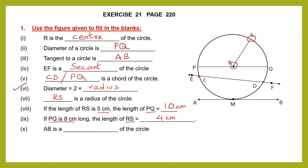Question 10: AB is a blank of the circle. A straight line which touches the circle only at one point is called a tangent. So AB is a tangent of the circle.